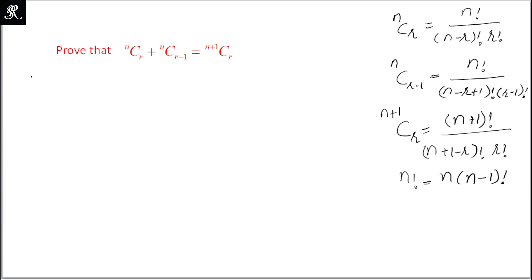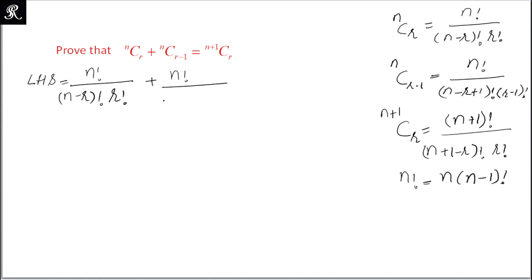So now we will use all these replacements. We will take the left hand side, which equals nCr plus nCr minus 1. We'll use these formulae and write nCr equal to n factorial upon (n minus r) factorial into r factorial, plus nCr minus 1 equal to n factorial upon that expression.